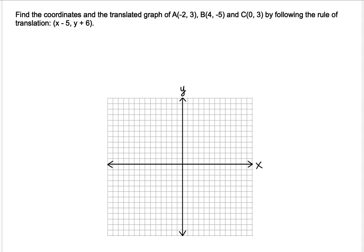In this example, we'd like to find the coordinates and the translated graph of the given shape characterized by three provided vertices A, B, and C by following the rule of the translation x minus 5 and y plus 6. So how does it work?